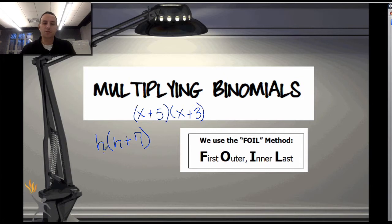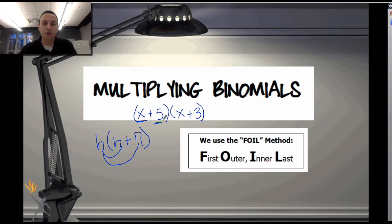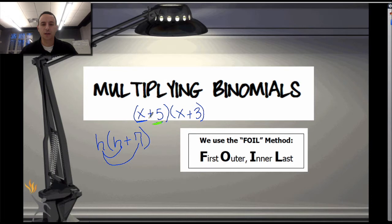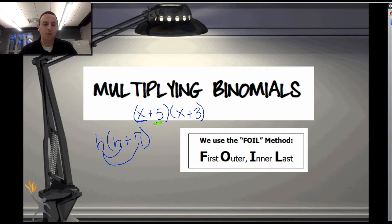It doesn't change what we did. To solve this problem, we distribute — we distributed H to both terms, H and to 7. Here, we're going to do something very similar: distribute each term — term 1 and term 2 — to both of the numbers in the following part. One way to remember this is to use FOIL, a mnemonic device. FOIL stands for First, Outer, Inner, Last — just a way to remember the order.